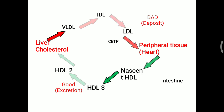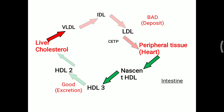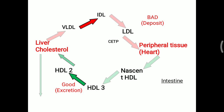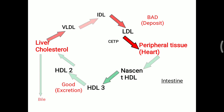Whatever cholesterol is taken up by the liver is ultimately excreted. HDL is considered good cholesterol because it transports cholesterol from peripheral tissue to the liver. Whatever cholesterol is present in the liver is excreted in the form of bile. Bile is the only excretory route for cholesterol in our body. That is how HDL metabolism occurs inside our body.